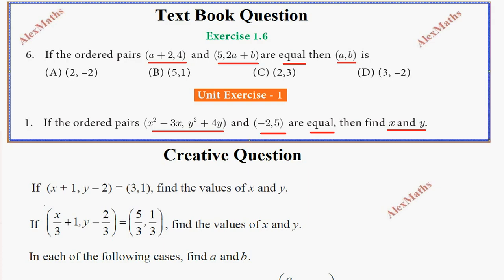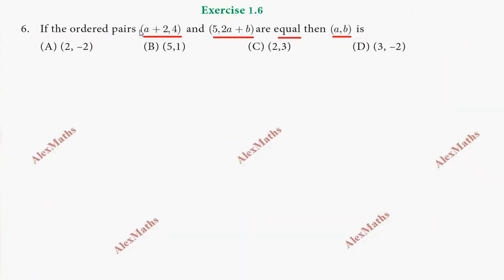Here we have two types of skills. If we have an equal sign, we can solve the question. So for the first question, exercise 1.6, question number 6, we have two ordered pairs that are equal. The first order pair is (a+2, 4) and the second ordered pair is (5, 2a+b).